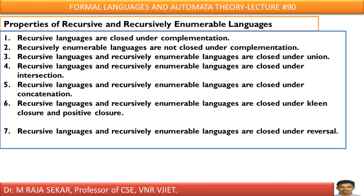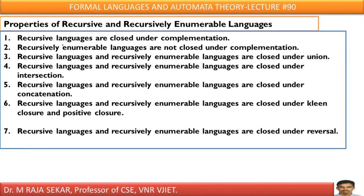Recursive language and recursively enumerable language are closed under union. What does it mean? If L1 is a recursive language and L2 is a recursive language, then L1 union L2 is also a recursive language. If L1 is a recursively enumerable language and L2 is a recursively enumerable language, then L1 union L2 is also a recursively enumerable language.